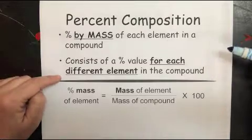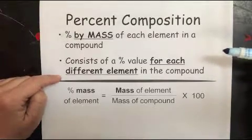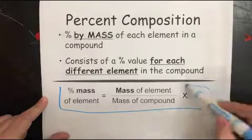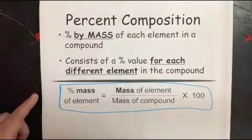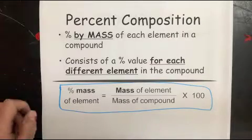So if you have three elements in a compound, that means you're going to have three different answers. The main thing you've got to know in order to do this is this formula here, and it's very similar to any percent formula that you're ever going to see.